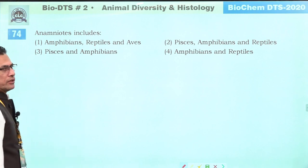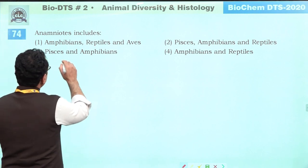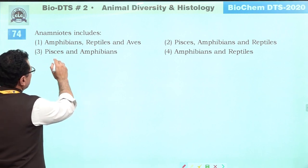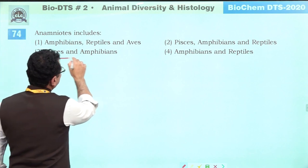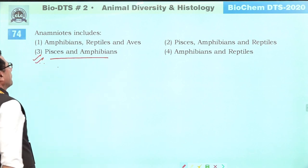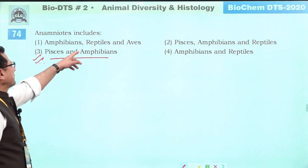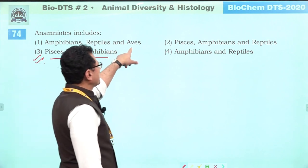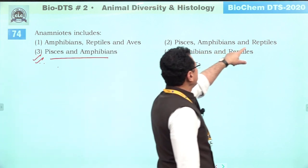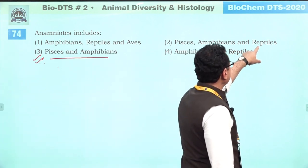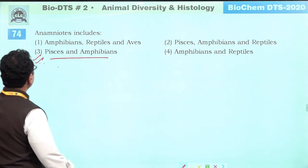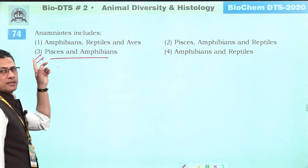Anamniotes are animals without amnion. These include Pisces and Amphibia. Reptiles, birds have amnion. Pisces and Amphibia do not have amnion. Answer is three.